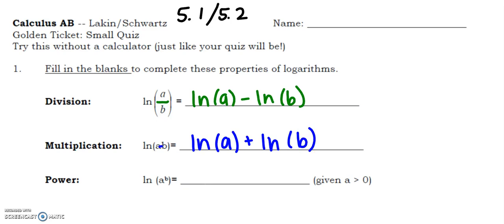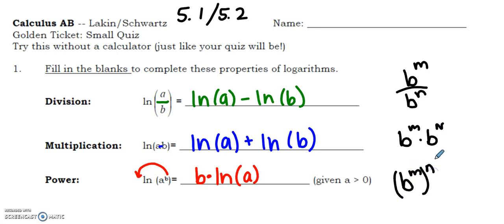If we know that our base here is a positive number, we can swing this b down in front, and raising something to a power now gets turned into a multiplication problem. Keep in mind these all came from your properties of exponents.